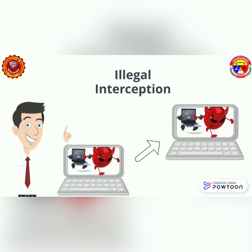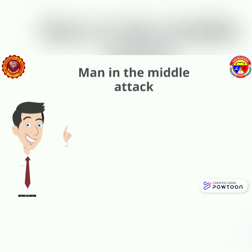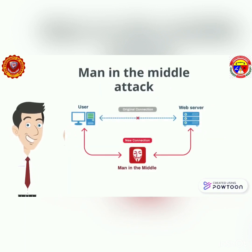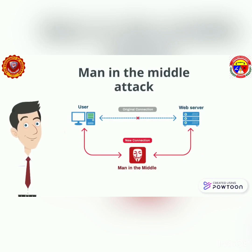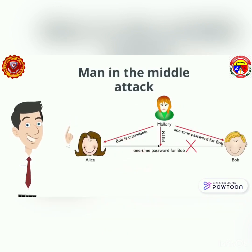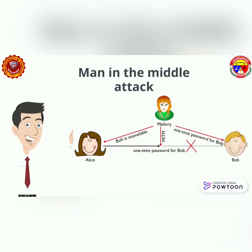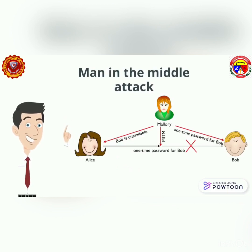One example of illegal interception is a man-in-the-middle attack, which empowers an offender to listen in on communication between the sender and recipient, and/or imitate the sender or recipient and communicate on their behalf. For example, suppose Alice wishes to communicate with Bob; meanwhile, Mallory wishes to intercept the conversation to eavesdrop and optionally to deliver a false message to Bob.